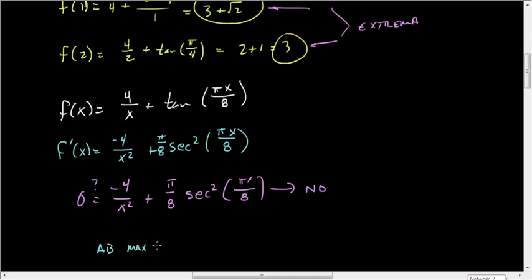And so we can state that the absolute maximum is at (1, 3 plus root 2). And the absolute minimum is at the point (2, 3). And there we have it.